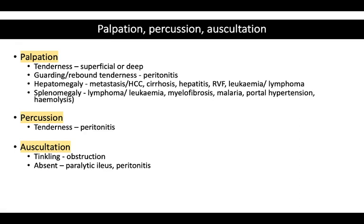On deep palpation you might find hepatomegaly. Causes include cirrhosis, metastases or hepatocellular carcinoma, hepatitis, acute liver inflammation due to right ventricular failure (causing venous congestion), and leukaemias and lymphomas. Similarly, splenomegaly causes include leukaemia, lymphoma, malaria, portal hypertension, and haemolysis — so patients with sickle cell disease or other haemoglobinopathies might get splenomegaly.